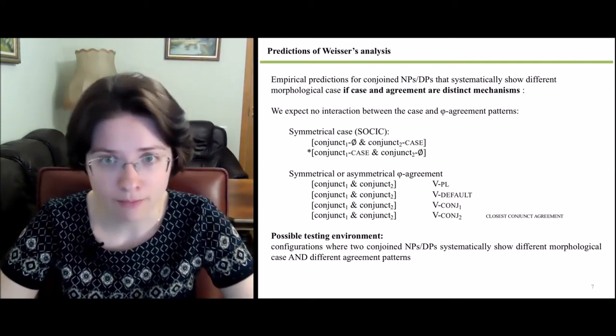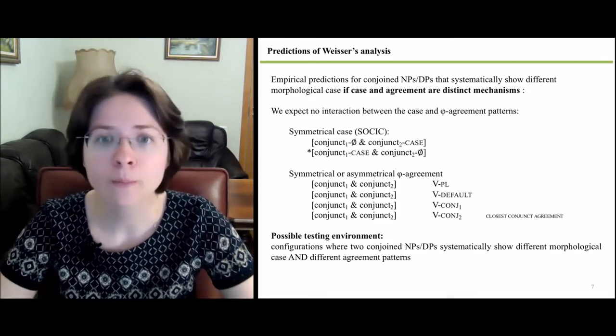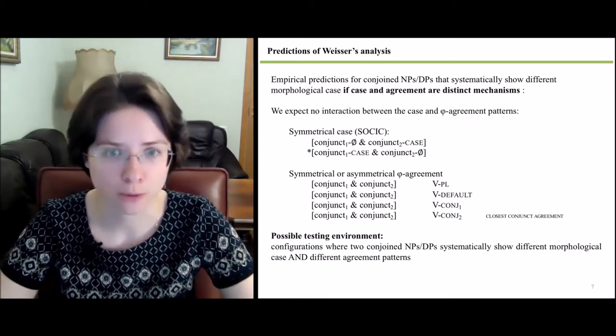That is, while there are constraints for case assignment, any agreement pattern is possible. To test these predictions, a language would be useful where one could compare configurations in which two conjoined NPs or DPs systematically show different morphological case and different agreement patterns. And this is exactly what we will be examining in Tatar.